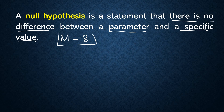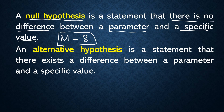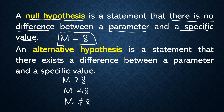For the alternative hypothesis, there exists a difference between a parameter and a specific value. So it's either the parameter is greater than, less than, or not equal to a specific value. We have three symbols for alternative hypothesis: greater than, less than, or not equal.